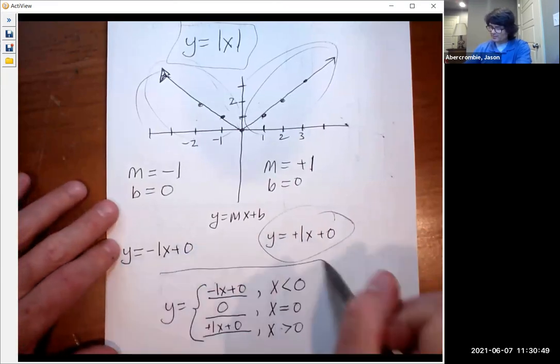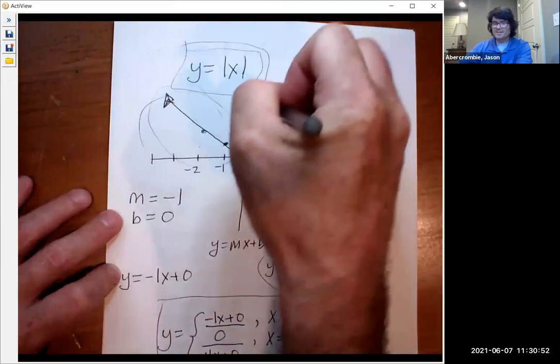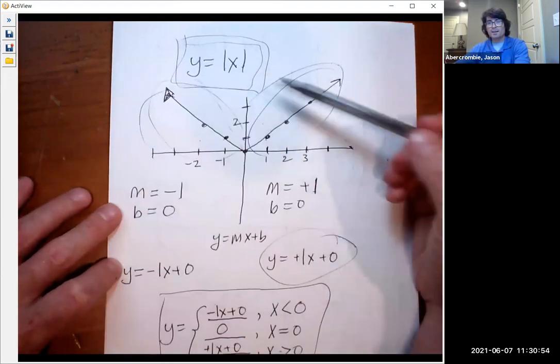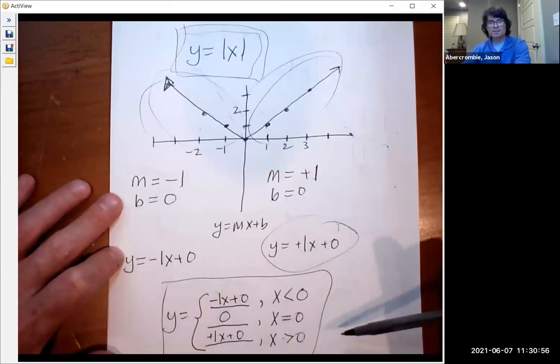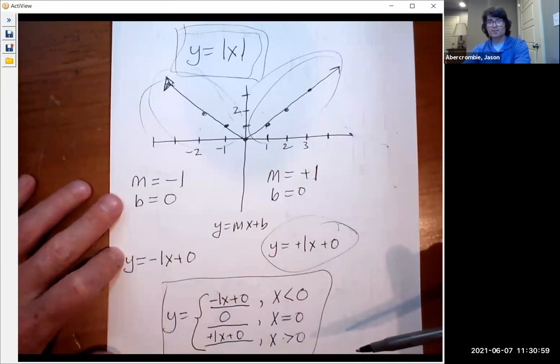So this guy and this guy are the exact same thing. This is written with an absolute value, and this is written as a piecewise function. They describe the exact same curve.